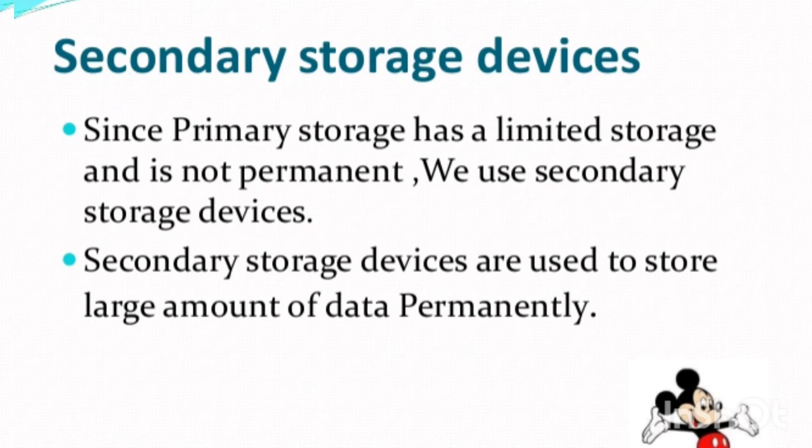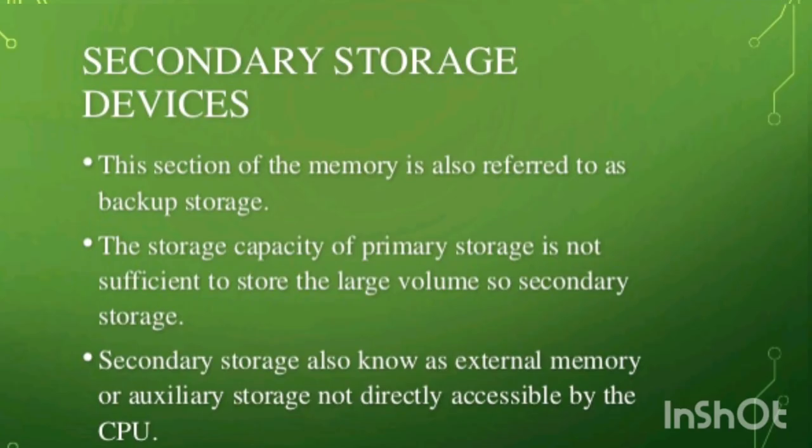As I already told you in previous videos, primary storage devices only have a limited storage capacity and it is not a permanent place to store data. But secondary storage devices are just the opposite — we can store a lot of information in them. These secondary storage devices store information permanently, that's why they are called backup storage, as they back up information for future purposes. Secondary storage is also known as external memory or auxiliary storage. These secondary storage devices are not directly accessible by the CPU, but primary storage devices are directly accessible by the CPU.